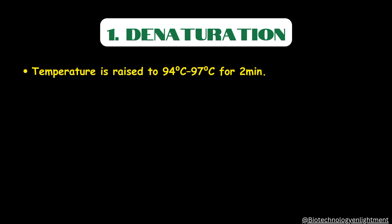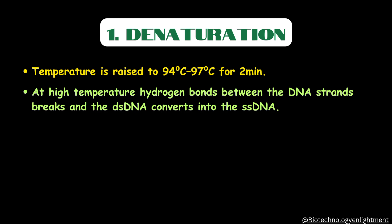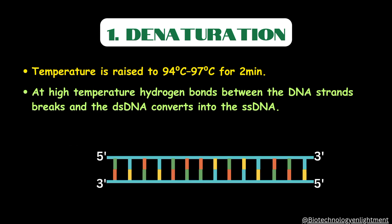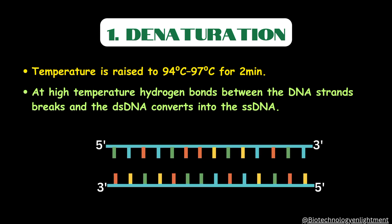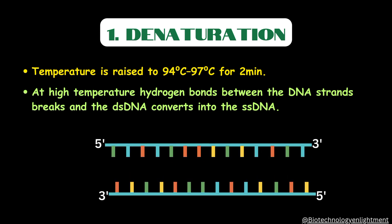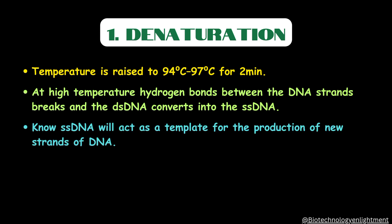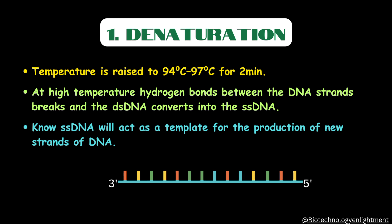The first step of PCR is denaturation — the name suggests something is broken down. The temperature in denaturation is raised to 94 to 97 degrees Celsius for approximately 2 minutes. At high temperature, the hydrogen bonds between the DNA strands break and the double-stranded DNA converts into single-stranded DNA. The single-stranded DNA will then act as a template for the production of new strands of DNA.